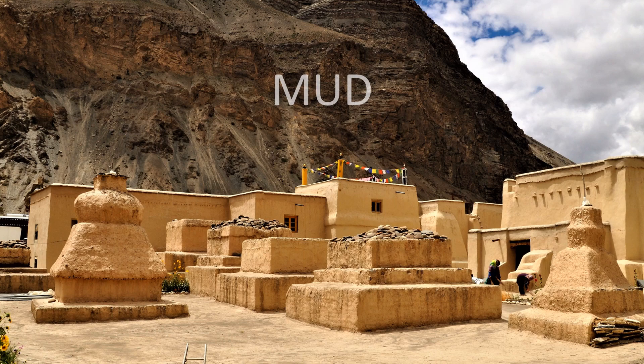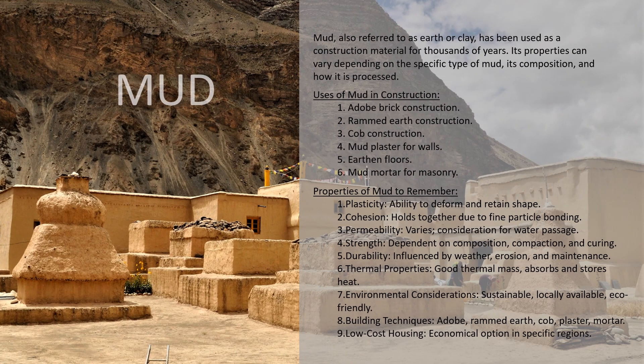So now let's discuss about the first material, which is mud. Mud is one of the oldest and most natural building materials used by humans in the construction industry. It consists of a mixture of soil, water and organic matter such as straw or plant fibers. Mud, also referred to as earth or clay, has been used as a construction material for thousands of years. Its uses in construction include adobe brick construction, rammed earth construction, cob construction, mud plaster for walls, earthen floors and mud mortar for masonry.